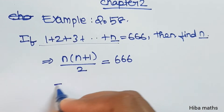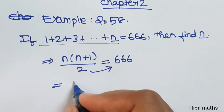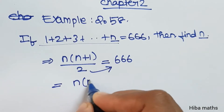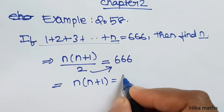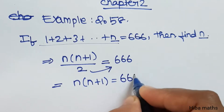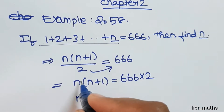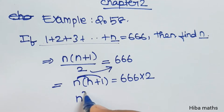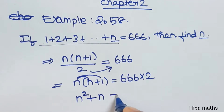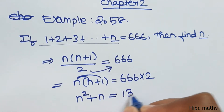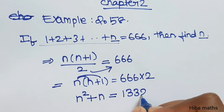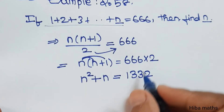Now in the second line, n into n plus 1 divided by 2 is equal to 666. So n into n plus 1 is equal to 666 into 2. Expanding: n squared plus n is equal to 1332.